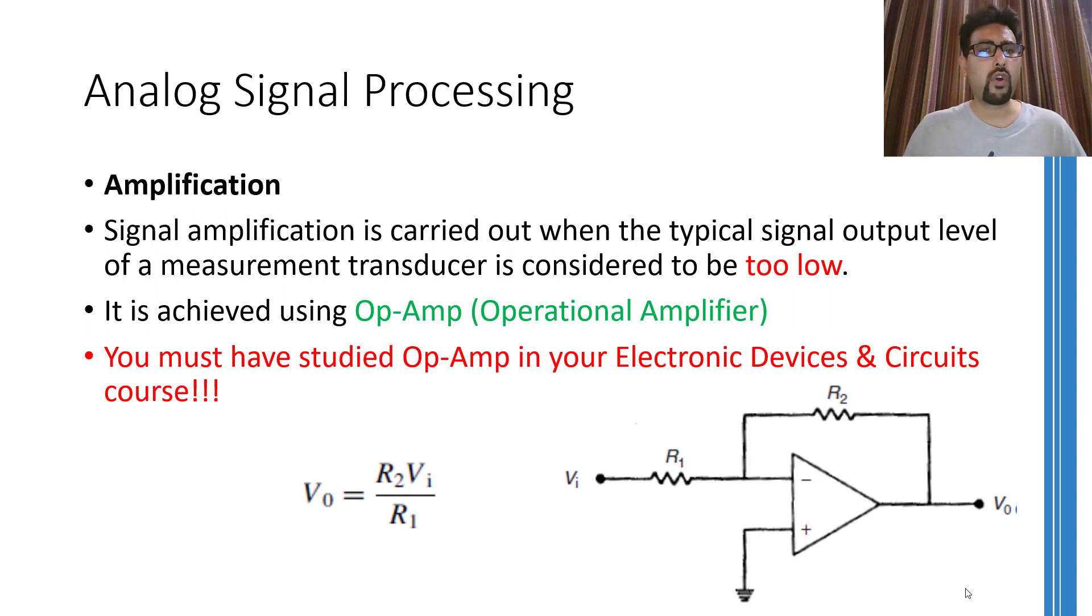You can easily see that if the value of R1 is larger than the value of R2, then the amplification factor or the gain of this circuit would be less than 1. And if the input voltage is multiplied with anything less than 1, the output voltage would be lesser than the input voltage, or you can say that the input voltage will be attenuated.